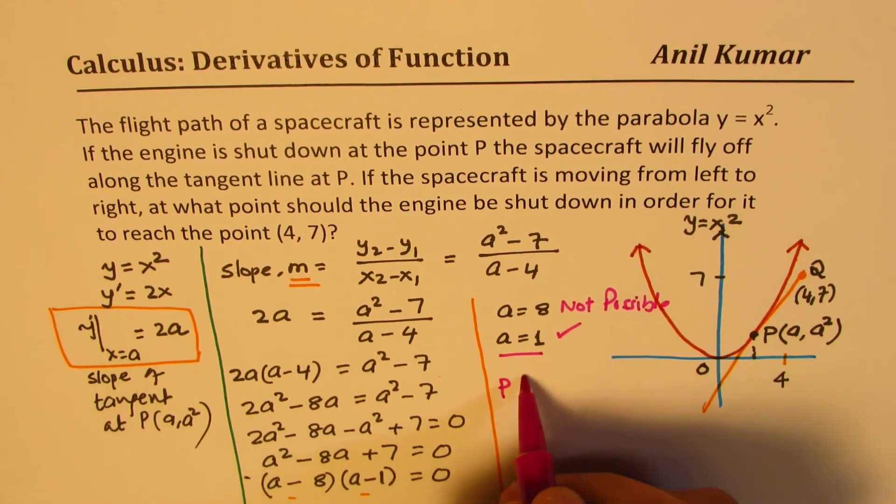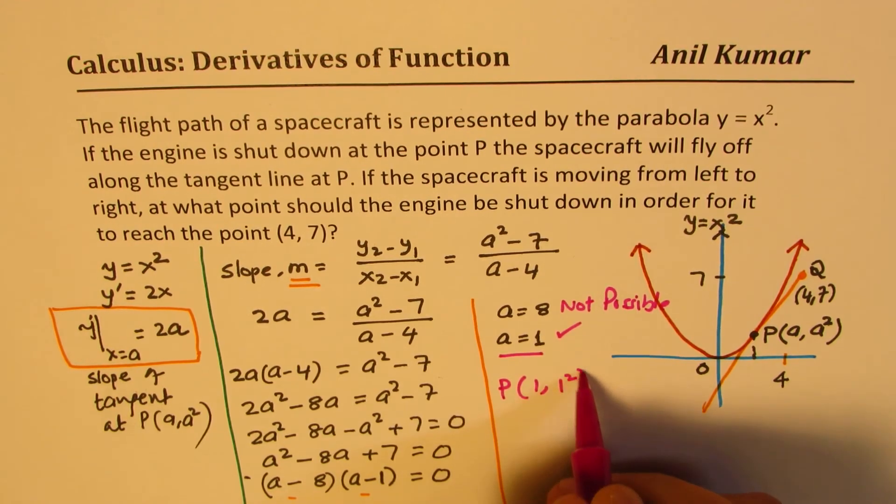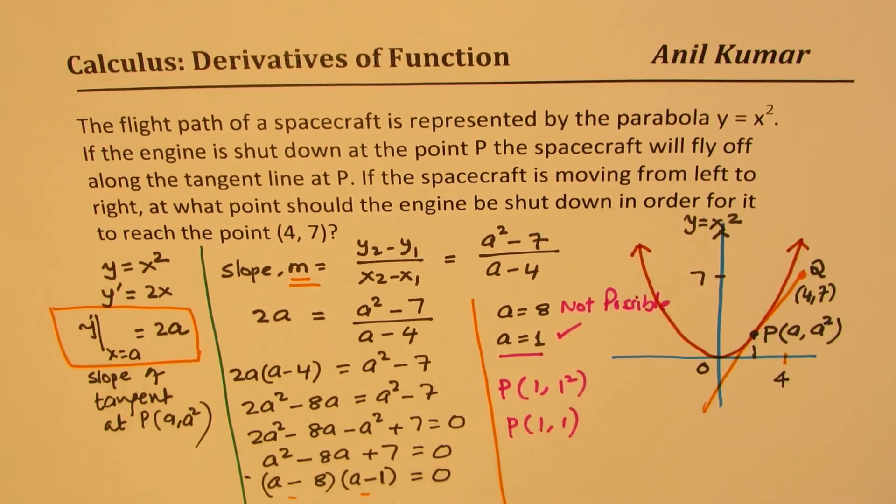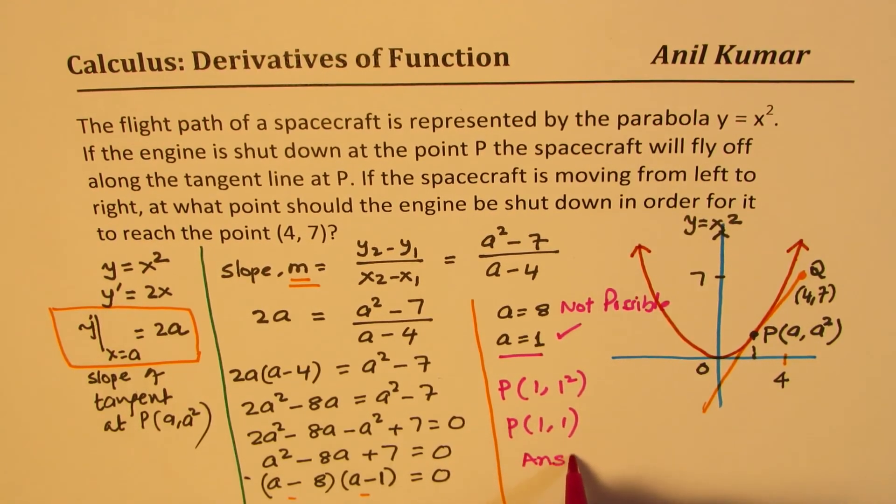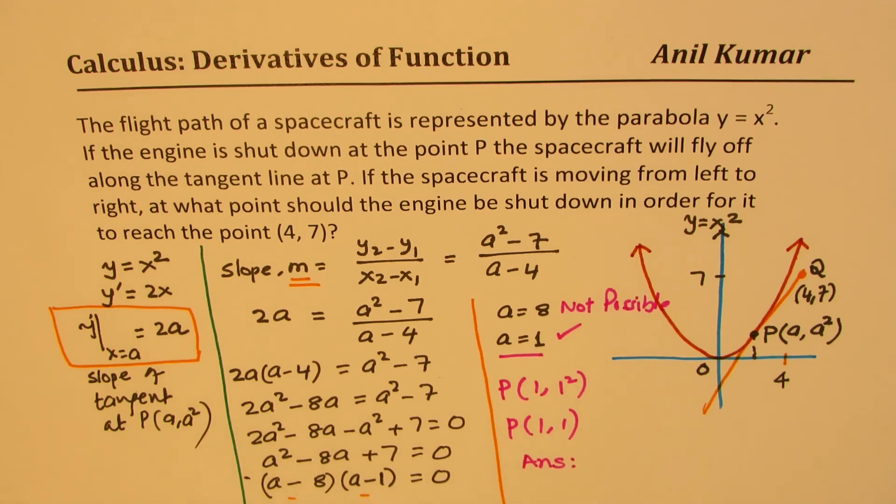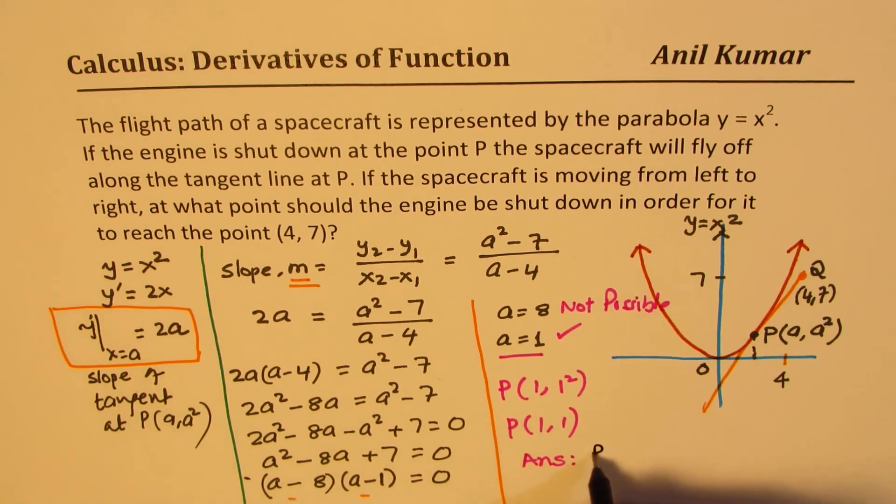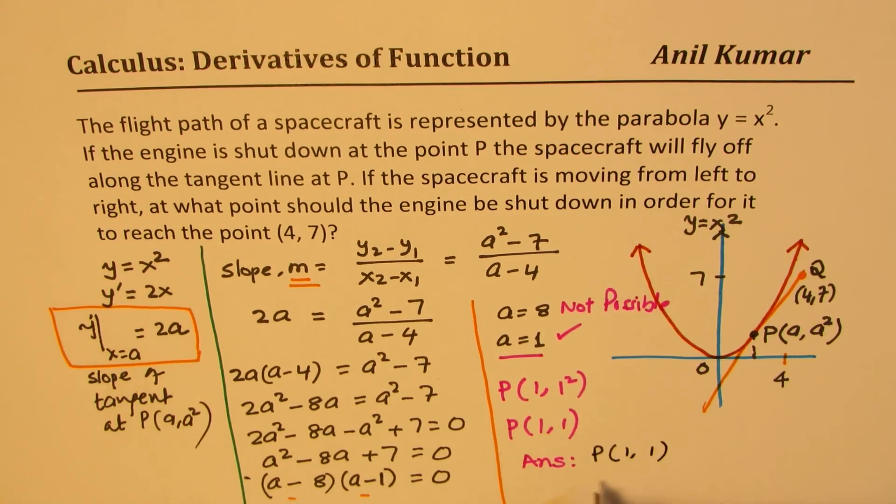So point P should be what? 1 and 1 squared. That means point P is (1, 1). Does it make sense to you? So we get our answer. And that is that the engine should be shut off at point P, which is (1, 1). So answer is point P coordinates are (1, 1).